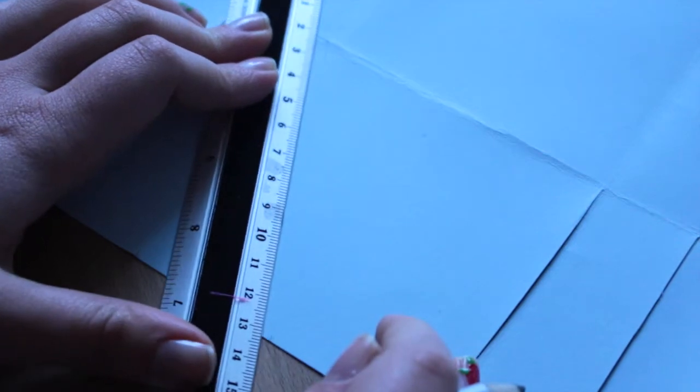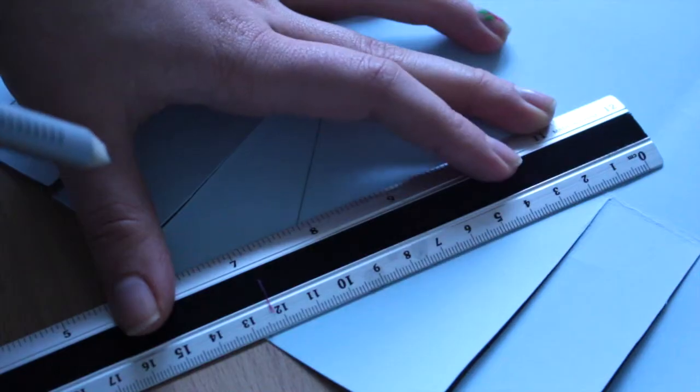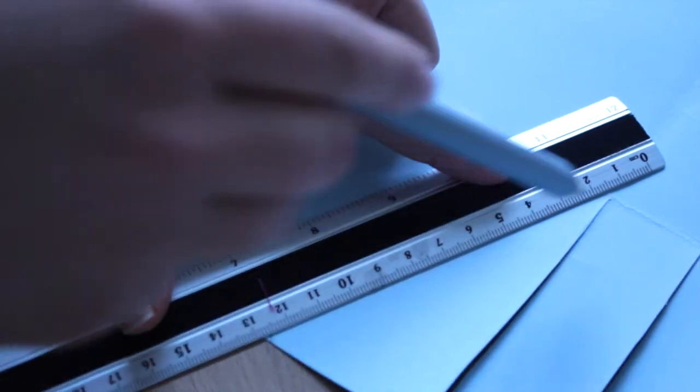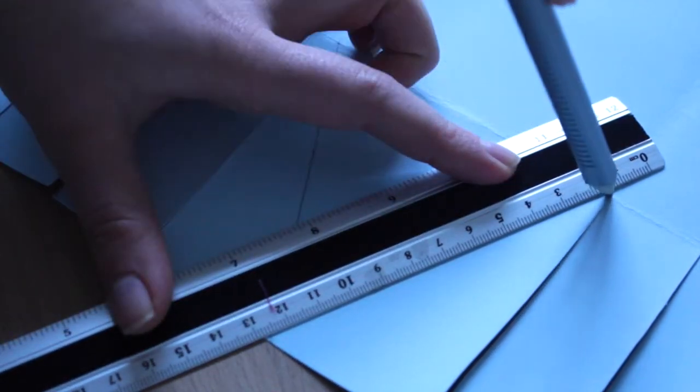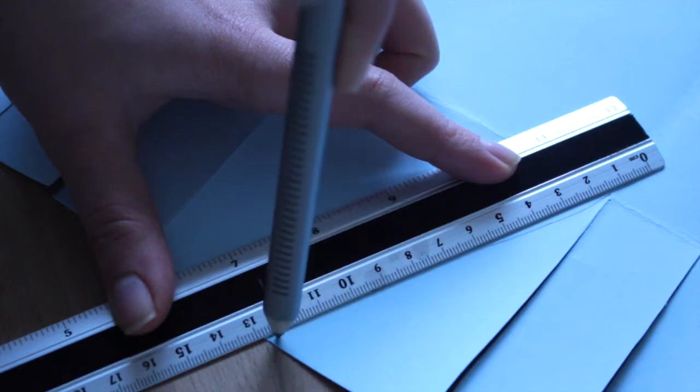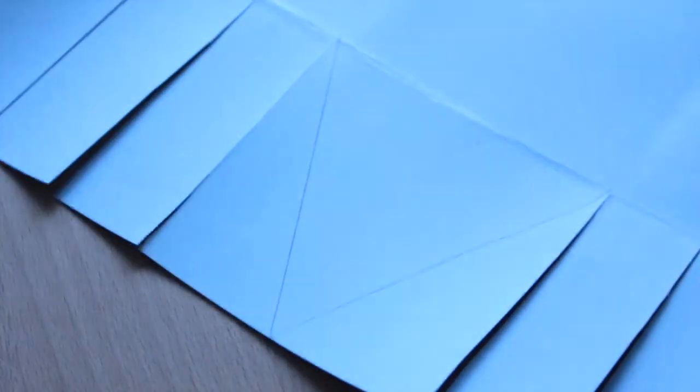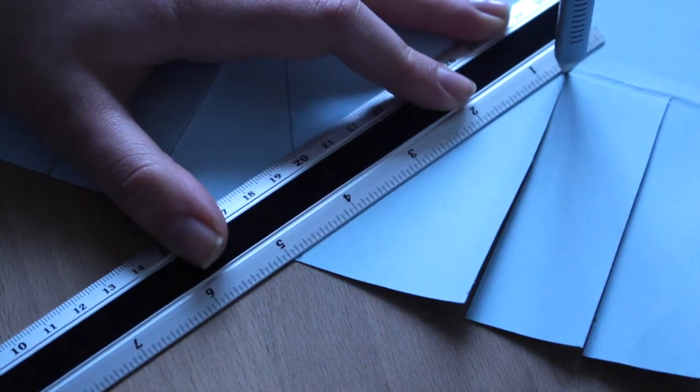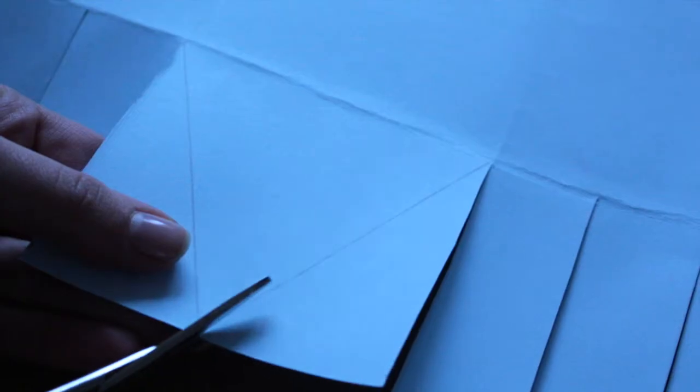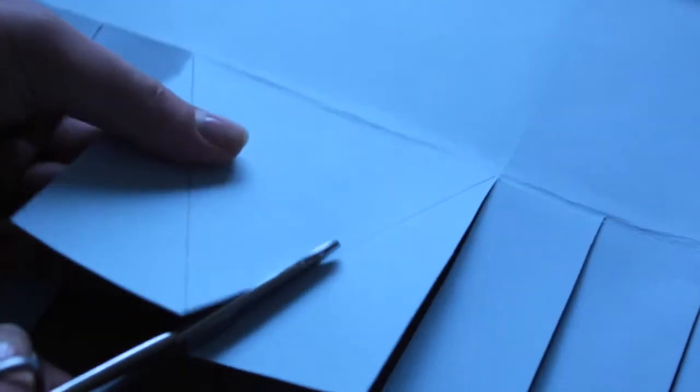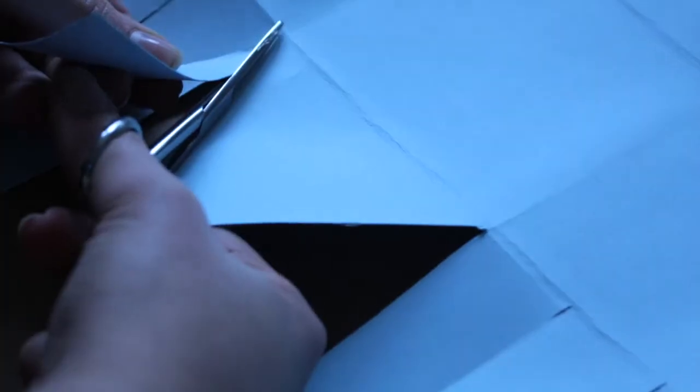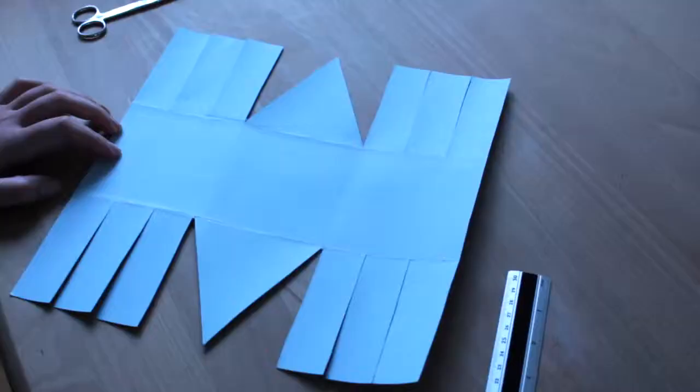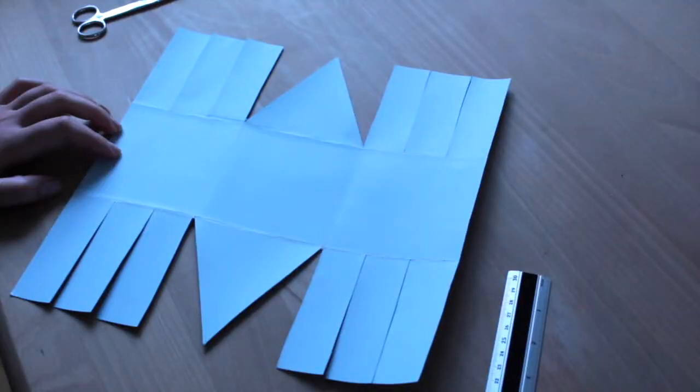Then place your ruler diagonally from the marking up to the corner of the square and make a mark. Do the same thing on the other corner, and remember the other square as well. Then cut out these triangles, and this is what it should look like by now.